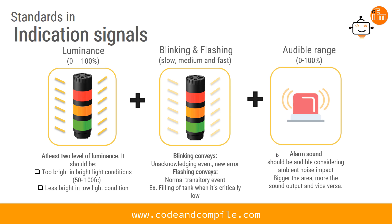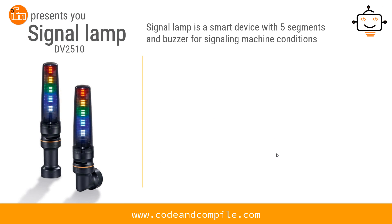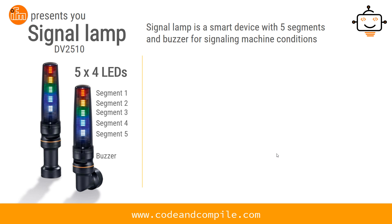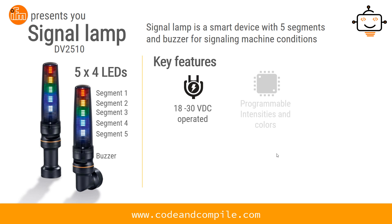When you think about these various devices, what could be an ideal device to use in your machine so you don't have to install so many separate devices? IFM brings you a lightweight smart device with five segments and a built-in buzzer for signaling machine conditions.